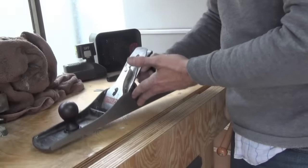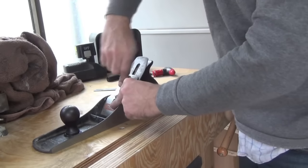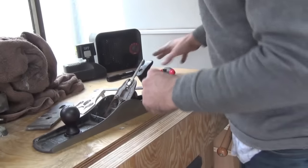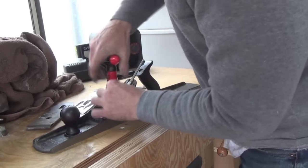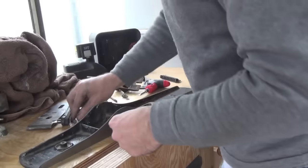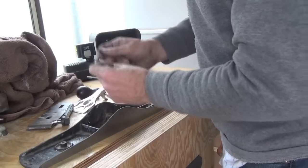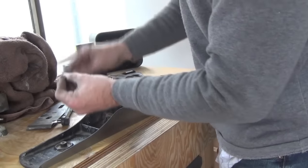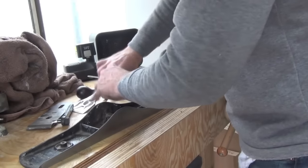With this in place, what we can do is start to disassemble the plane. Now we've got all of these rusty little screws and washers and all sorts of things that need cleaning up.